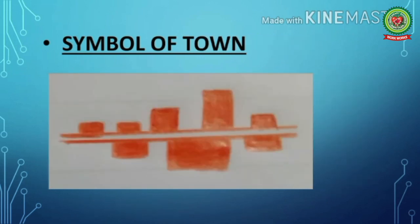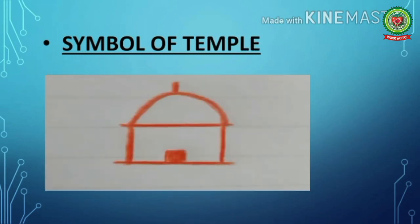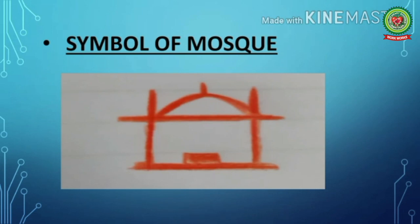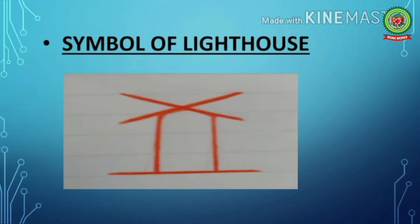Another important conventional symbol is town, shown with a red color symbol. Next is temple, also depicted with a red color symbol. Next is mosque, depicted with red color. Another important conventional symbol is lighthouse — a tower with a powerful flashing lamp built near the sea shore — also depicted with red color.